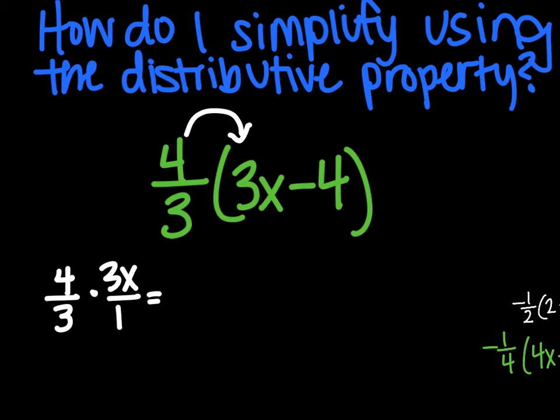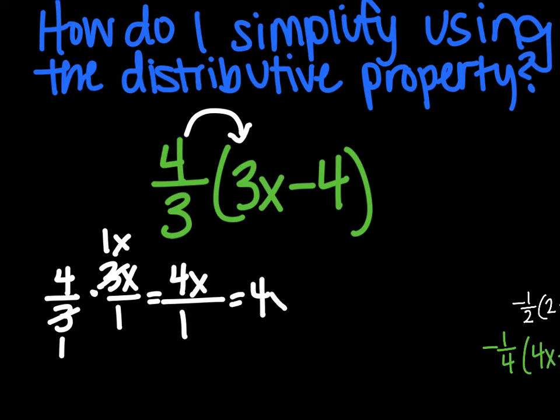You'll want to see if you can simplify before you multiply. You can divide by 3, so you're left with 1x and 1. So 4 times 1x is just 4x, and 1 times 1 is 1, which simplifies to just plain old 4x.